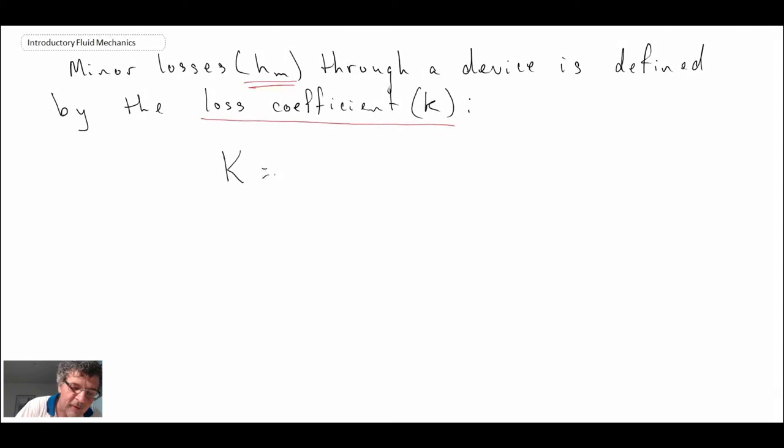So to define k, sometimes people call them a loss coefficient, h_m equals k times v squared over 2g. And here, remember v is the average velocity in the pipe. So taking volumetric flow rate divided by area.